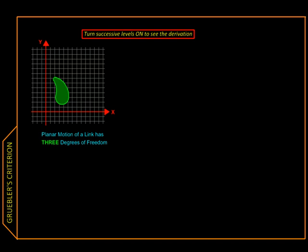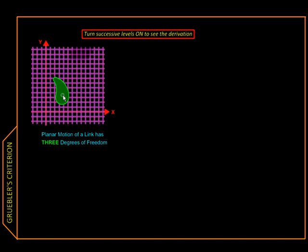So far we have seen that a mechanism consists of links connected with pairs. Now we will see the overall effect of these links and pairs on the mechanism, and for that we will start with a single link in a planar or two-dimensional mechanism.